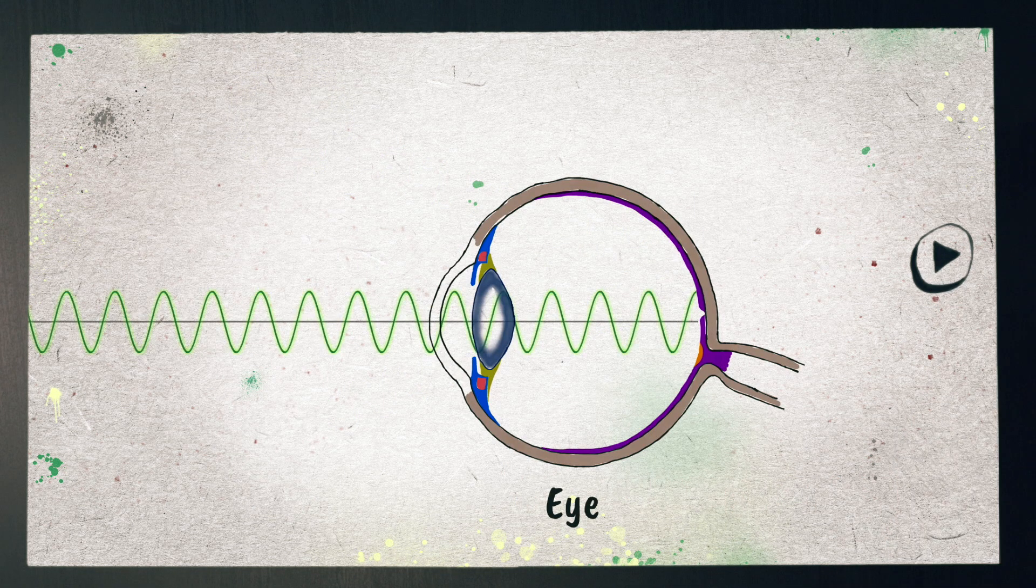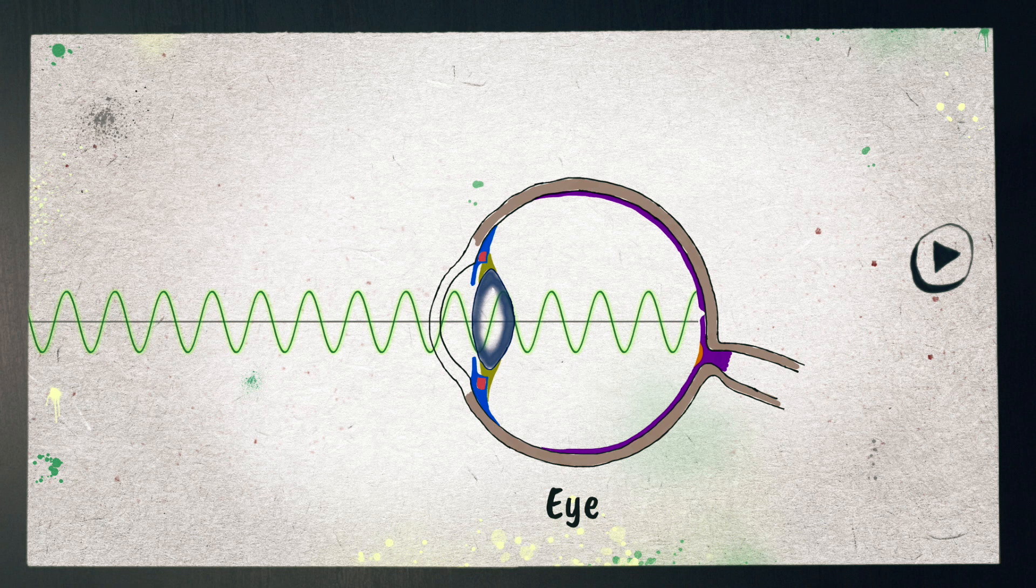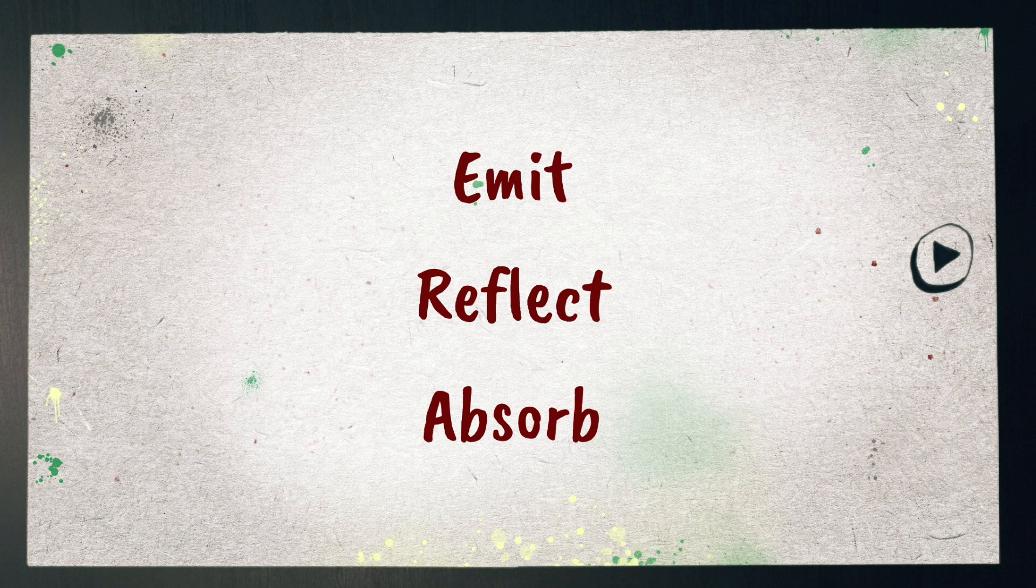The light that reaches your eyes, either from a luminous object or from a non-luminous object that light reflects off, is absorbed by special cells in the eye. So materials can emit, reflect, or absorb light.